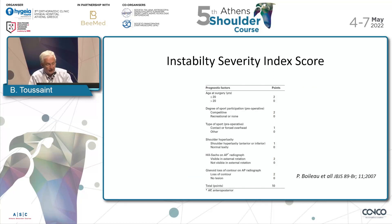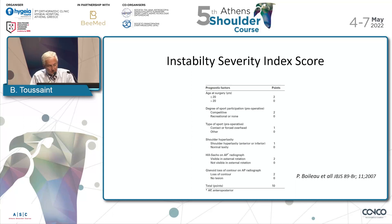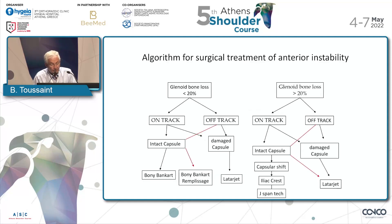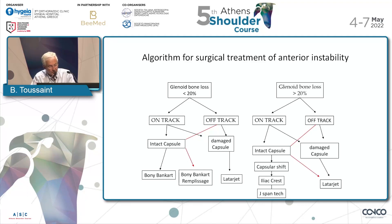Another type of HAGL lesion is shown. To evaluate the limits of soft tissue procedure, the ISIS score is very interesting because you can select the patient factors — age, degree of sports participation, type of sport, and shoulder hyperlaxity — and static soft tissue factors. You can use this algorithm regarding the engaging lesion. You can proceed to the Latarjet procedure if you have a damaged capsule; if you have an intact capsule, it is possible to manage the bone defect.